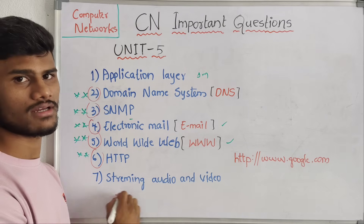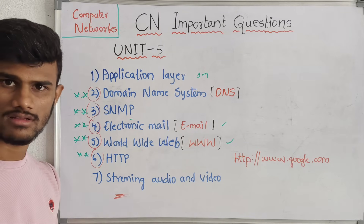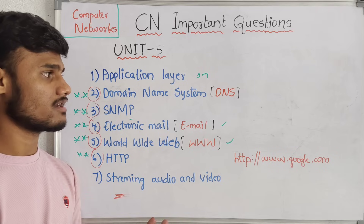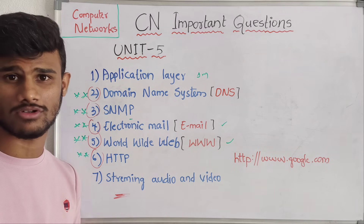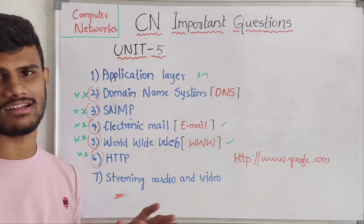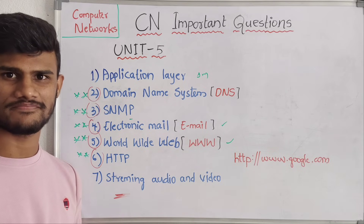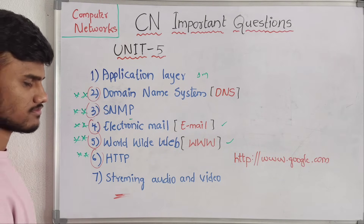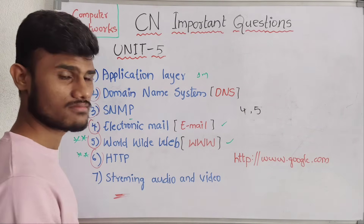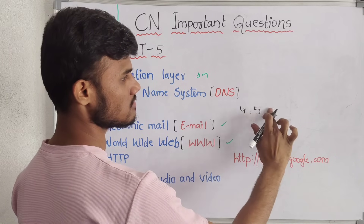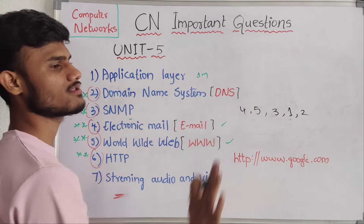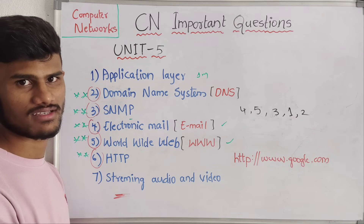This is all about the fifth unit. Not only the fifth unit — for the entire CN subject, these are the important questions and important topics. Notes will be provided in maximum short period of time. The unit-wise sequence for study is: first unit, then fourth unit, then fifth unit, then third unit, and last is the second unit.